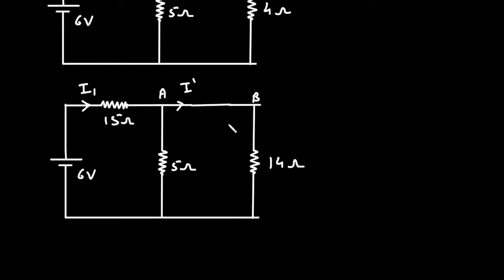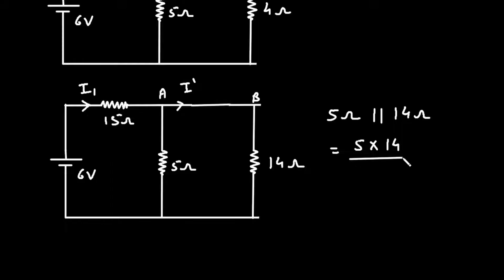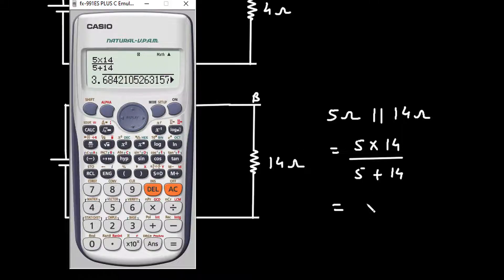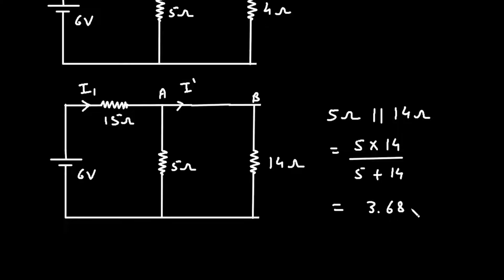Now let's find the value of I1. We can see that the 5Ω and 14Ω are connected in parallel. So 5 parallel with 14 equals 5 × 14 divided by 5 + 14, which equals 3.68Ω.